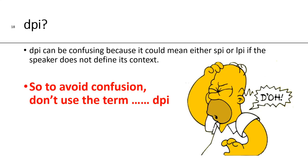This leaves us with our last term to define: DPI. DPI can be confusing because it could mean either the SPI or the LPI if the speaker does not define it in context. To avoid confusion, I recommend we don't use the term DPI at all. Just use pixels per inch, spots per inch, and lines per inch — not dots per inch.